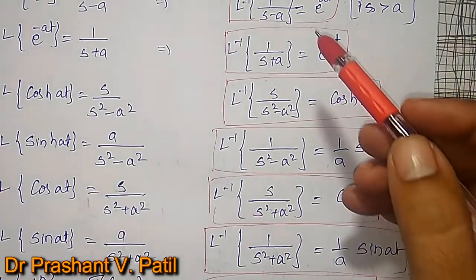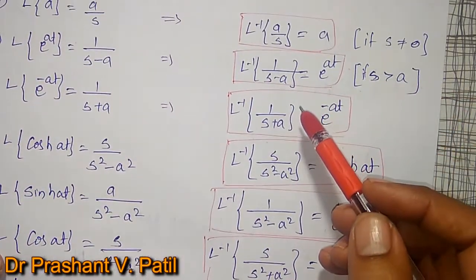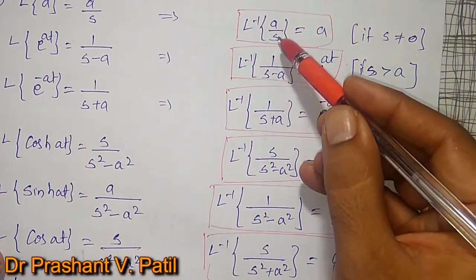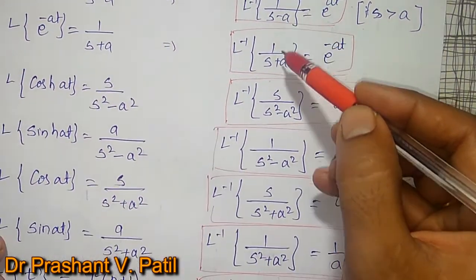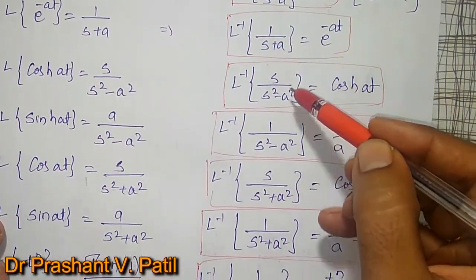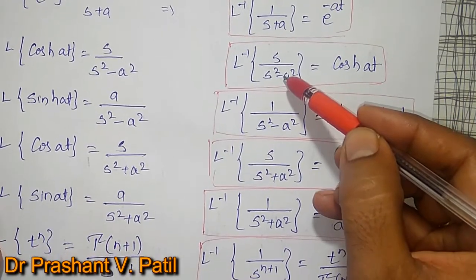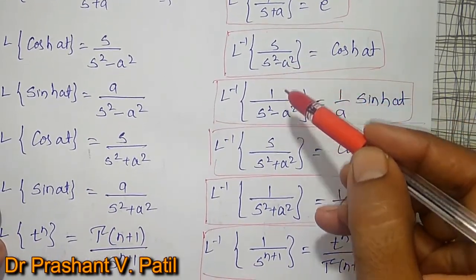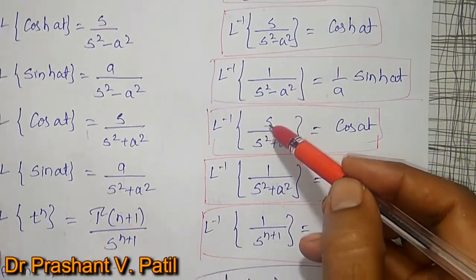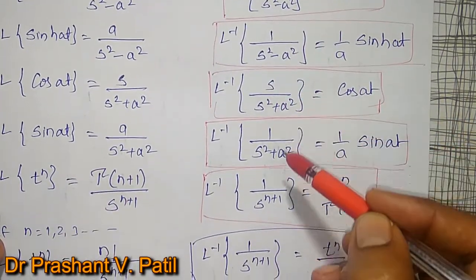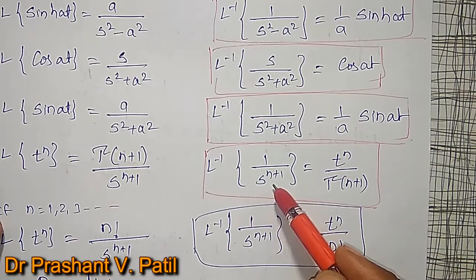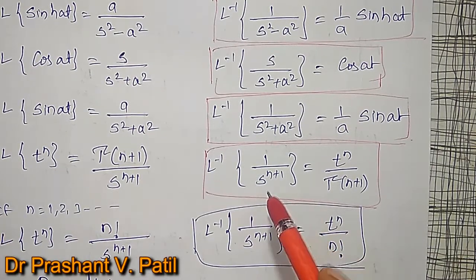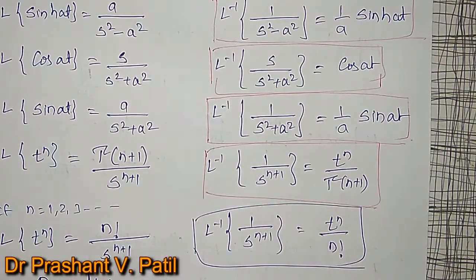The denominator may be divided by S, S minus A, S plus A, S squared minus A squared, S squared plus A squared, or S to the power n — then only the inverse Laplace transform can be found.